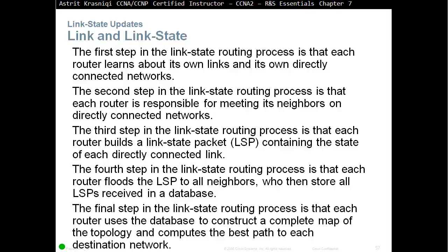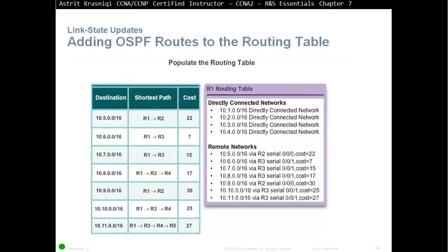The final step in the link state routing process is that each router uses the database to construct a complete map — the topology table — and computes the best path to each destination network. As you receive LSPs from neighbors, you put them in the topology table (called the database table in OSPF), then run the algorithm to determine the best path — whether to go through neighbor one, two, or three. The best path chosen through the algorithm is then added to the routing table.